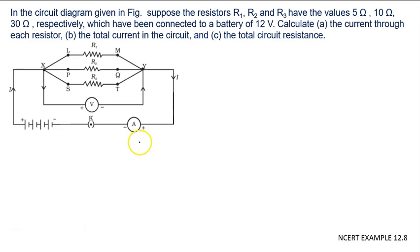In the circuit diagram given in the figure, suppose the resistances R1, R2, and R3 have the values 5 ohm, 10 ohm, and 30 ohm respectively, which have been connected to a battery of 12 volt voltage. Calculate the current through each resistance, total current in the circuit, and total resistance.